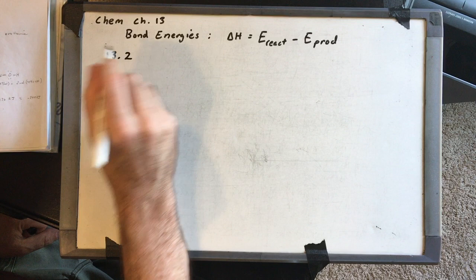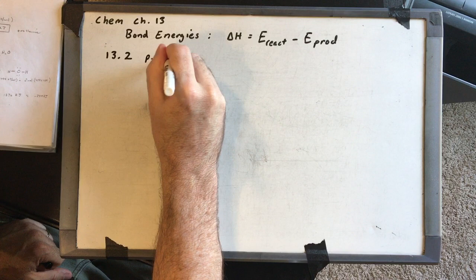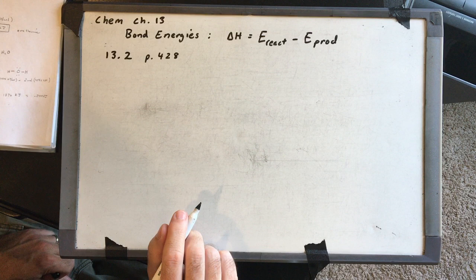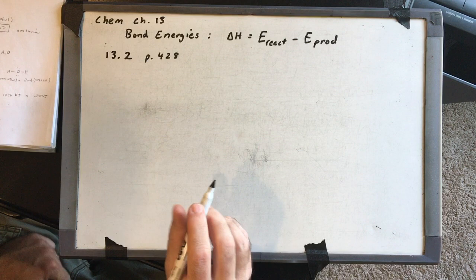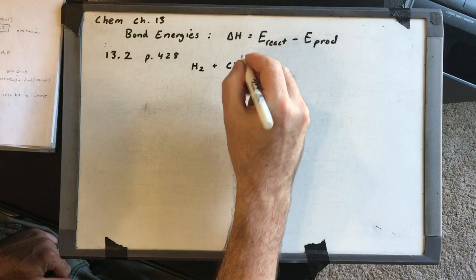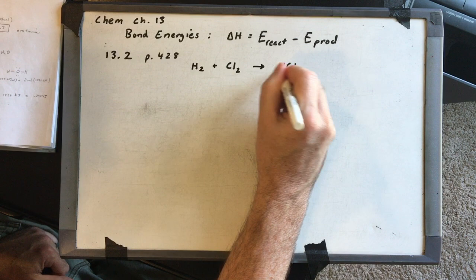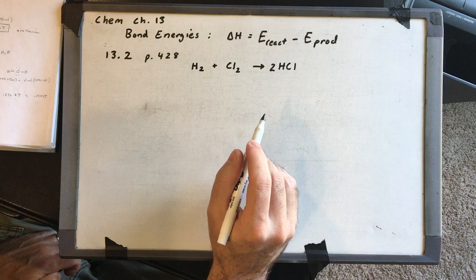Let's look at on-your-own 13.2 on page 428. To make HCl, chemists react hydrogen gas and chlorine gas at high temperatures. What's the delta H of this process and is it exothermic or endothermic? The chemical equation is H2 plus Cl2 yields 2HCl. We don't need phases for the bond energy method, but we do need Lewis structures for each compound.